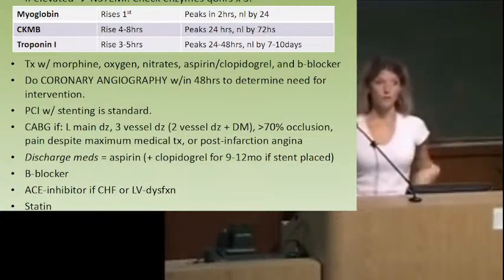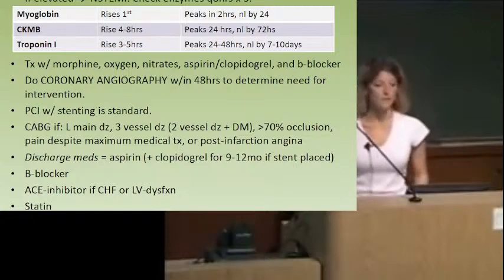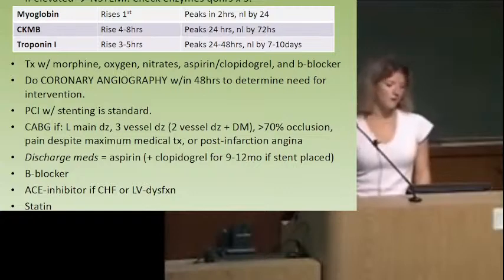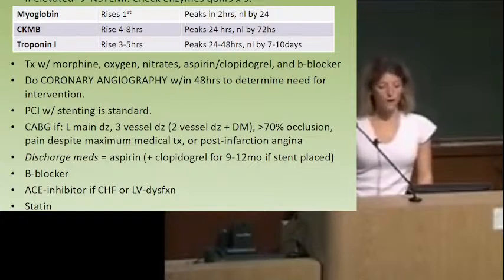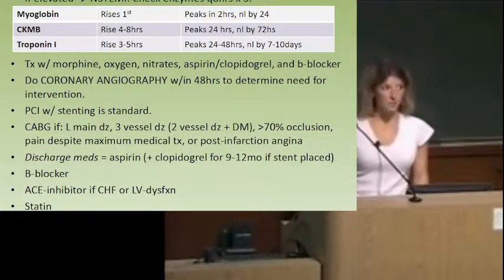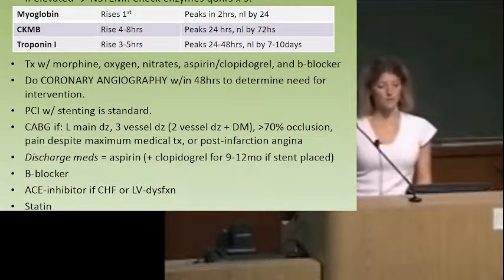You wouldn't expect myoglobin to still be elevated a couple days later. We treat NSTEMIs with morphine, oxygen, nitrates, aspirin or clopidogrel, and a beta blocker — that's your classic cocktail for a cardiac patient. Coronary angiography is the best test to schedule for these patients, ordered within 48 hours, because that's how we determine how to proceed.